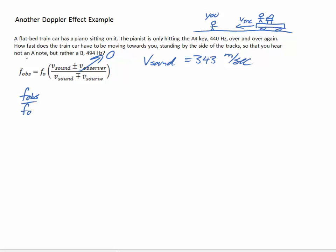So let's go ahead and do the algebra without plugging in any numbers. So what I'm going to do is I'm going to divide both sides by F0. So F_obs over F0 is equal to V_sound over V_sound.